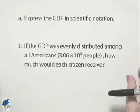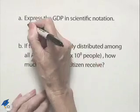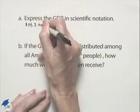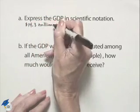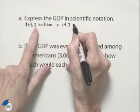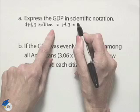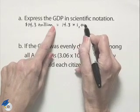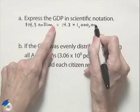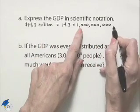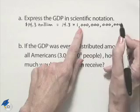Express the GDP in scientific notation. So we were told it was $14.3 trillion. That's going to be 14.3 multiplied times 1 trillion. How do you end up indicating that? Let's start with thousands. If we add three more zeros, we're into millions. Three more zeros is into billions, and three more zeros is into trillions.